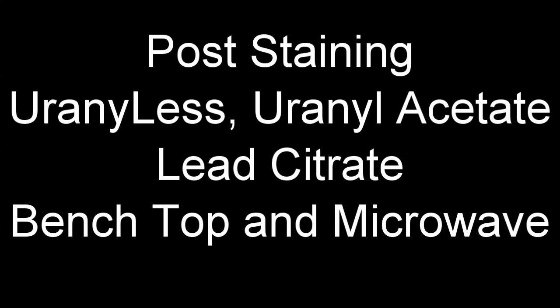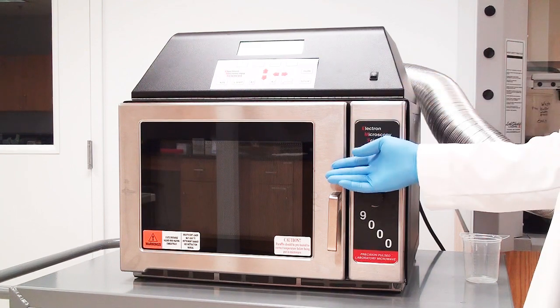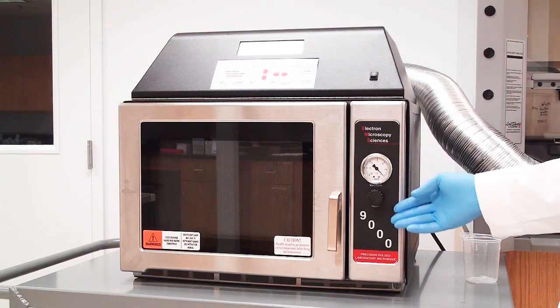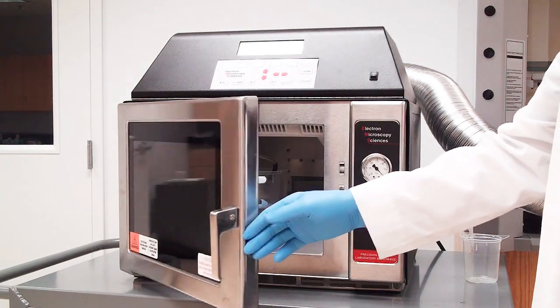In this post-staining video, we're going to compare uranyl less with uranyl acetate and also benchtop staining versus microwave staining. The microwave we'll be using is the EMS 9000, and if you use this for regular processing, it's going to function exactly the same.